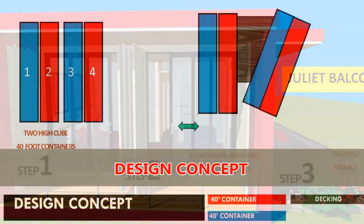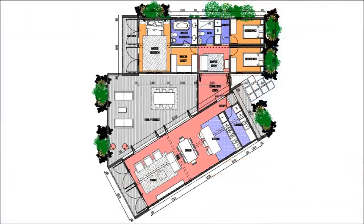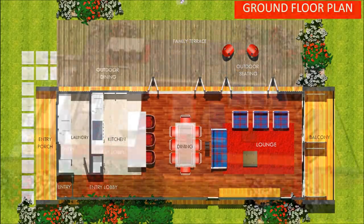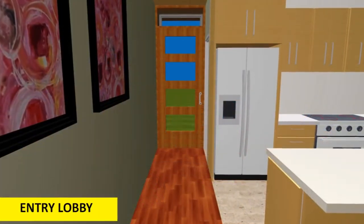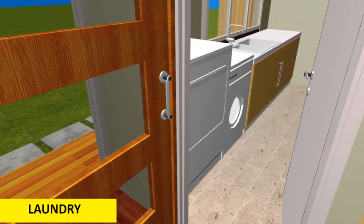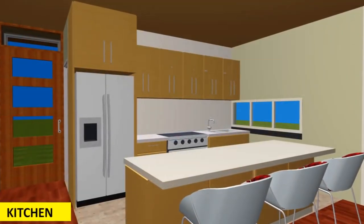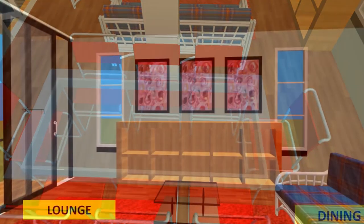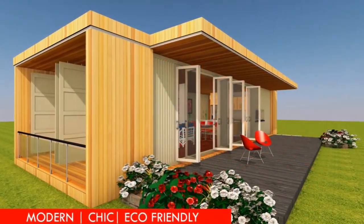This modular design uses four 40-foot shipping containers to create a 1,280-plus square feet, three-bedroom house. The open plan living module is designed to accommodate the following salient features: from the entrance lobby, you can access the laundry room, an open plan kitchen with an island breakfast table for three, a dining table for six people, and a spacious lounge opening to the outdoor family terrace, accessed through the full-height folding doors.